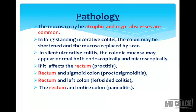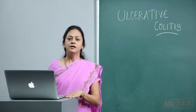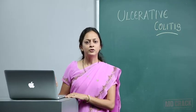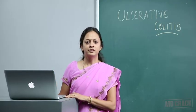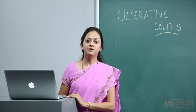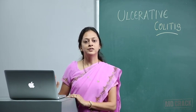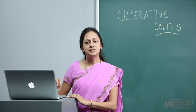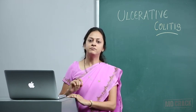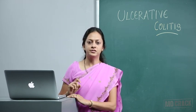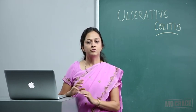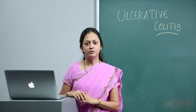If rectum and left colon is involved, then it is called left-sided colitis. And if rectum and entire colon is involved, it is called pancolitis. Notice that rectum is present in all these — this disease basically starts in the rectum, and this is one differentiating point from Crohn's disease.